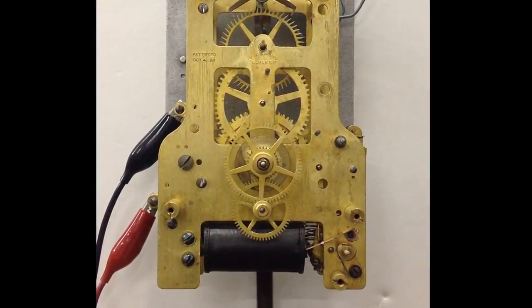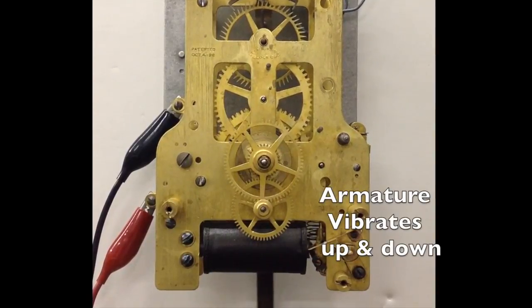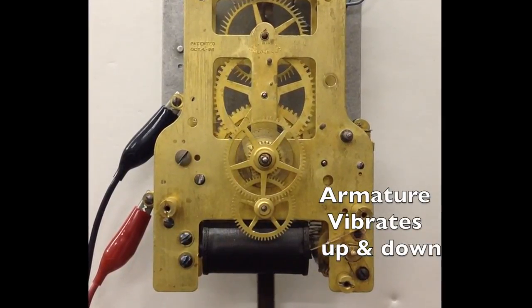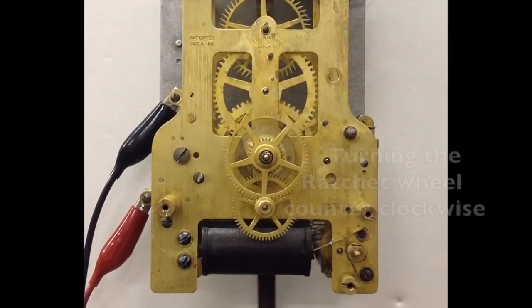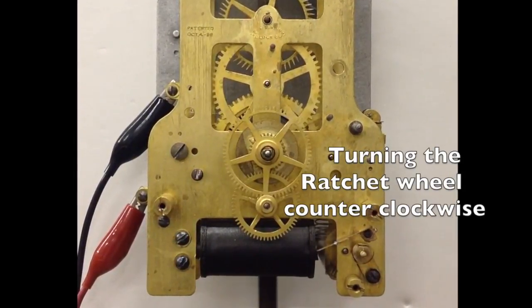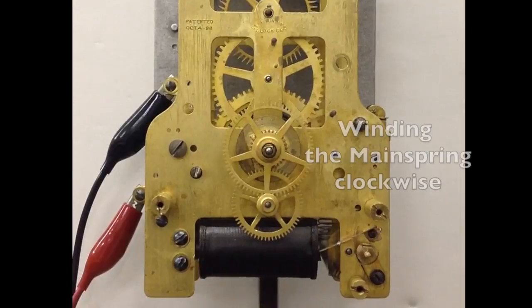A low voltage DC current propels the armature of the winding motor in a vibrating up-and-down motion. This turns the ratchet wheel counterclockwise, winding the mainspring clockwise.